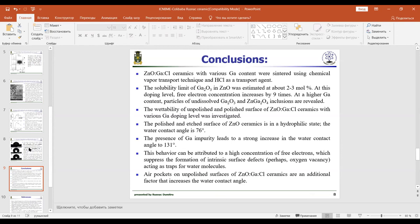The presence of gallium impurity leads to a strong increase in the water contact angle to 141 degrees. This behavior can be attributed to a high concentration of free electrons which suppress the formation of intrinsic surface defects, perhaps oxygen vacancies, acting as traps for water molecules. Air pockets on unpolished surfaces of zinc oxide gallium chloride ceramics are an additional factor that increases the water contact angle.